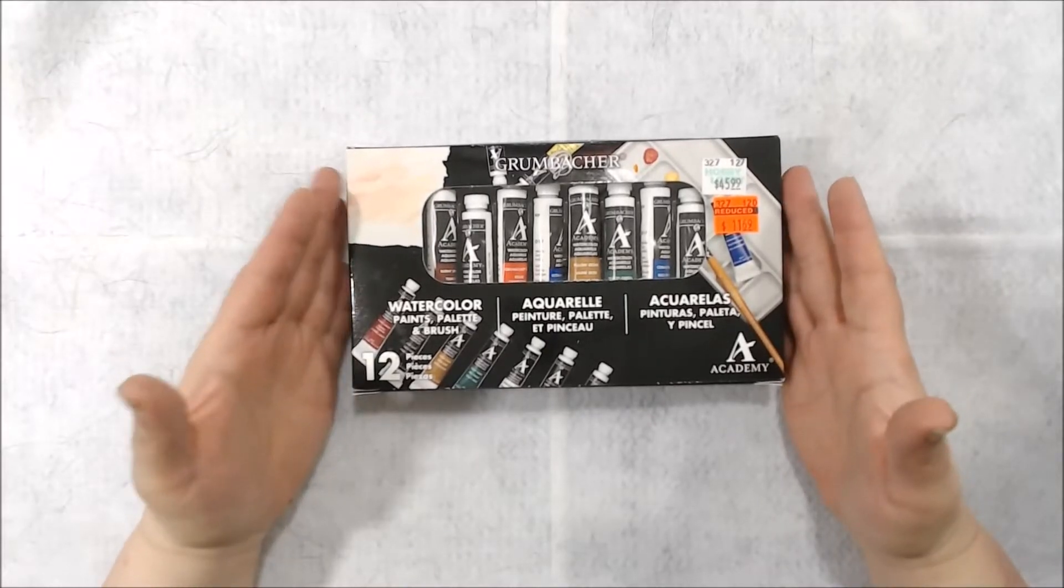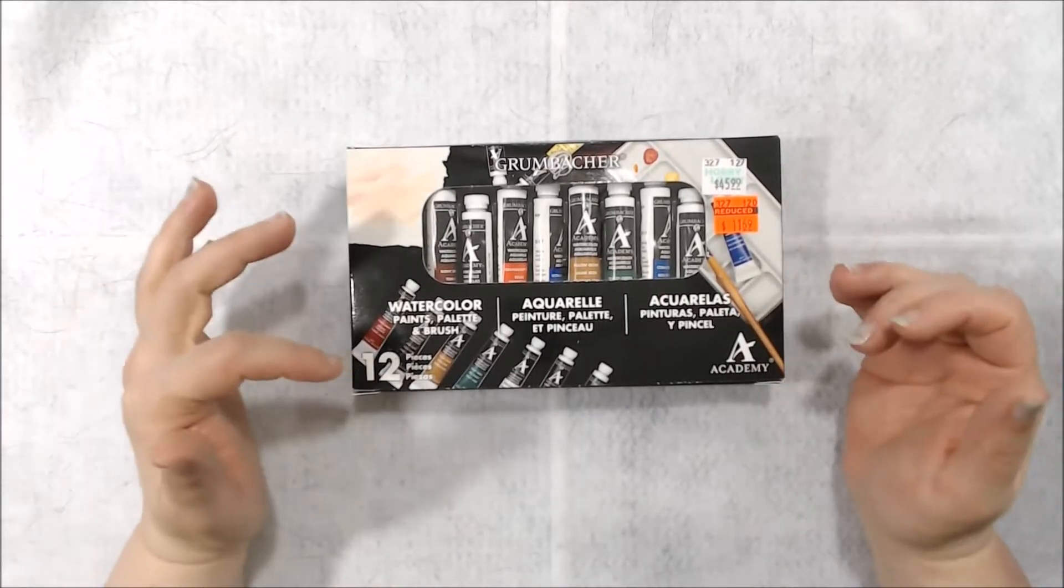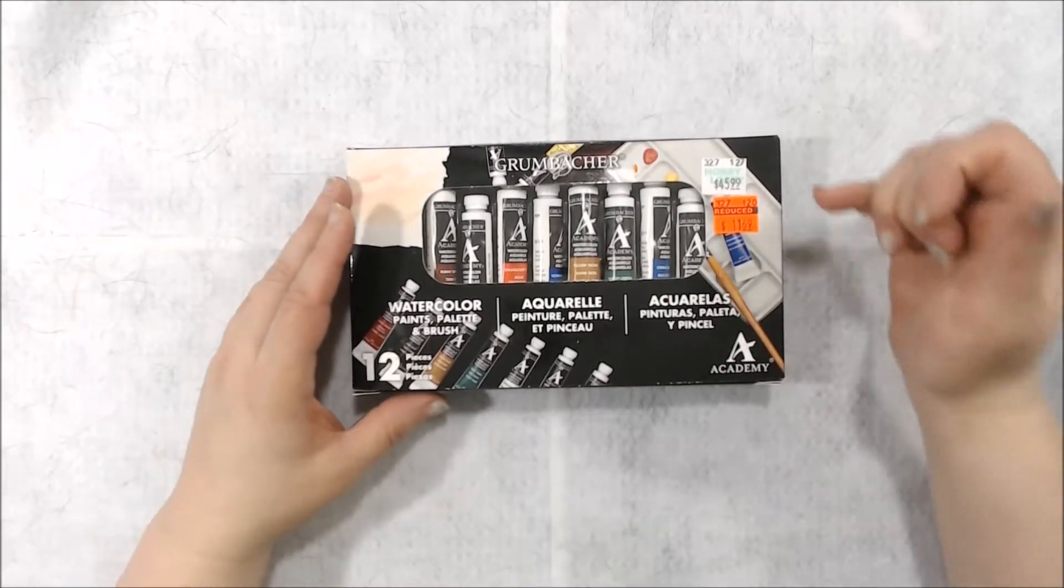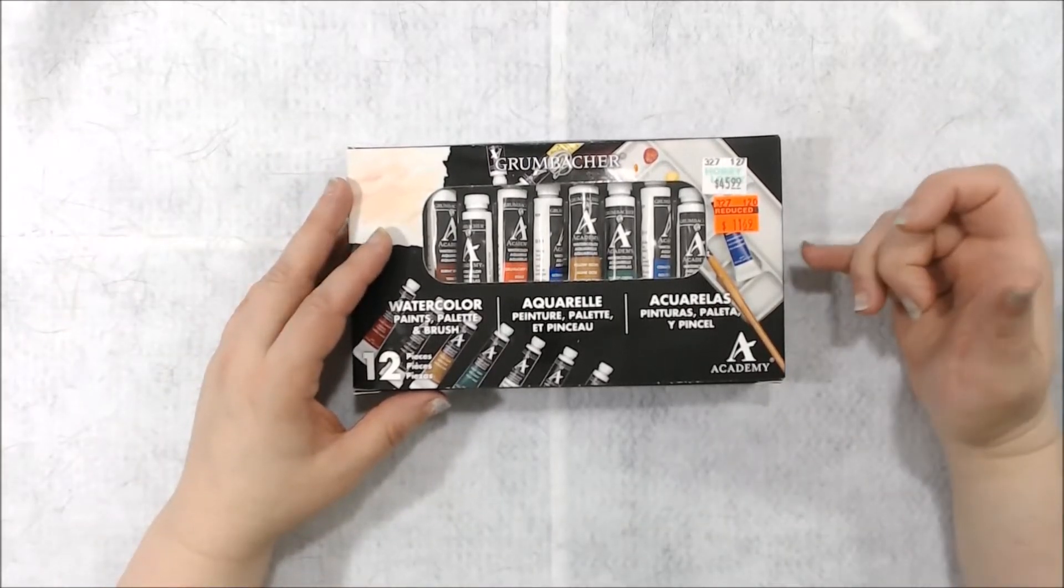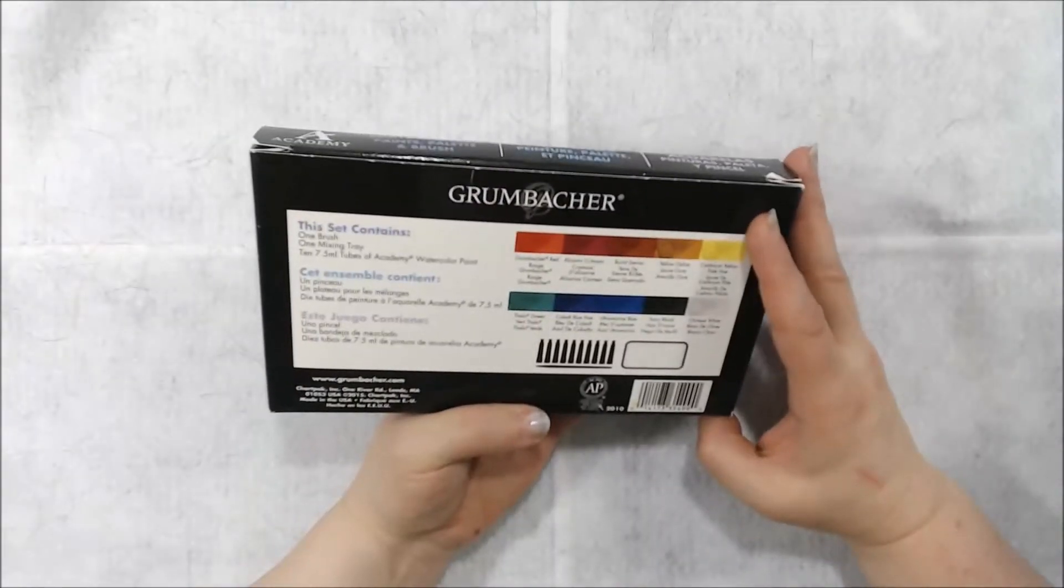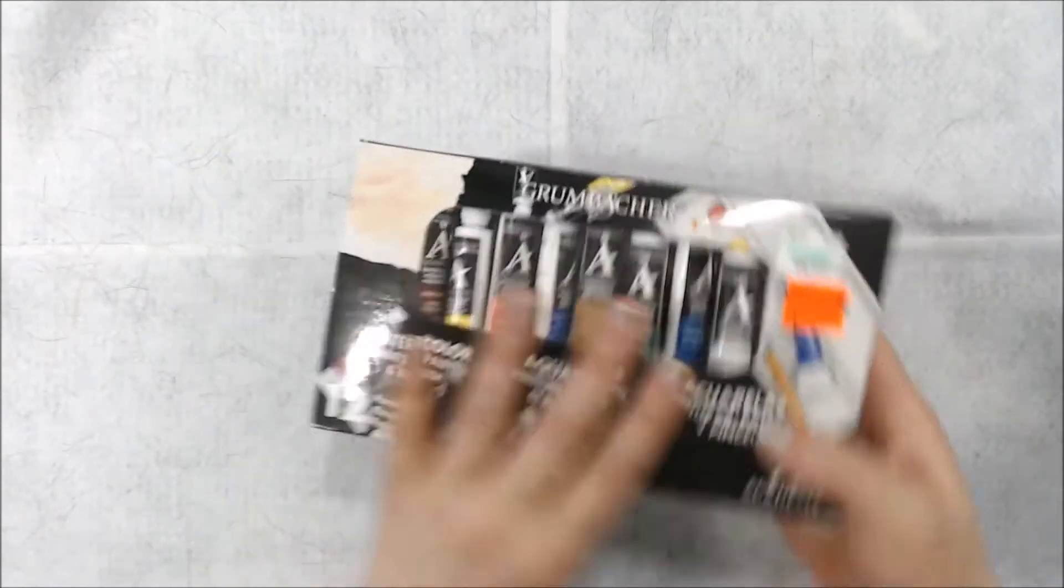I found this Gumbacher Watercolor Paints, Palette and Brush 12-piece set. It was on clearance. It's normally $45.99 and I got it for $11.69. The tubes are 7.5 milliliter. There's 10 of them. So this is going to be fun to play with.